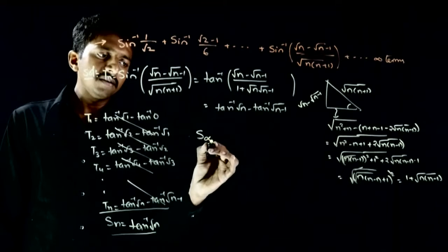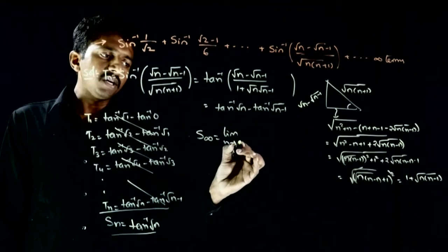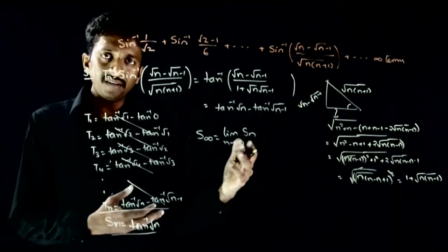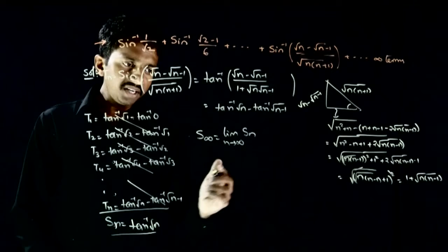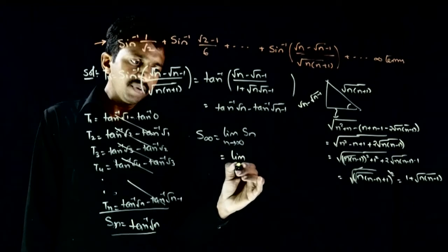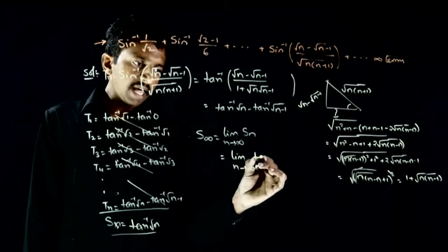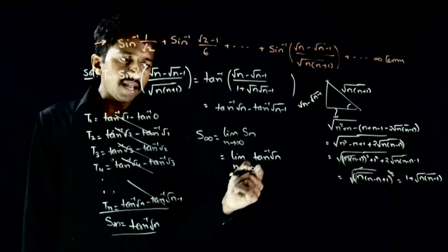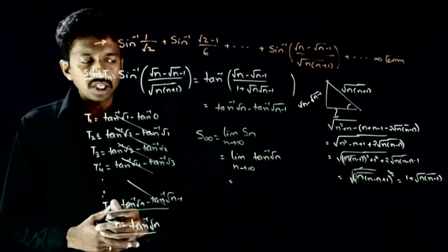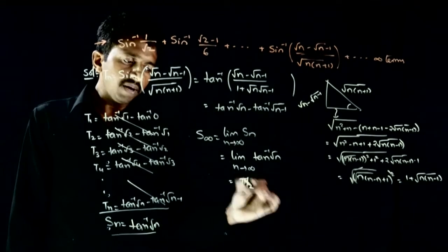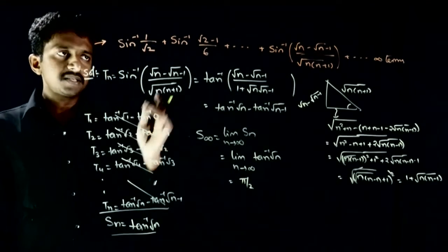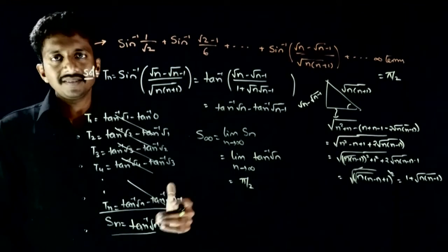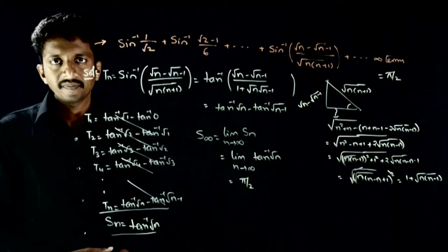So what is S infinity? It is the limit as n tends to infinity of Sn = tan⁻¹(root n). As n tends to infinity, root n also tends to infinity, and tan inverse of infinity is π/2. Therefore, the sum of this infinite sequence is equal to π/2. That is the answer to this question. Thank you.